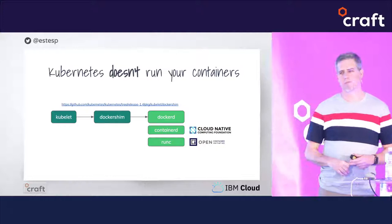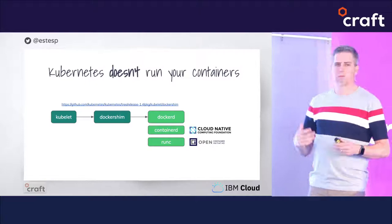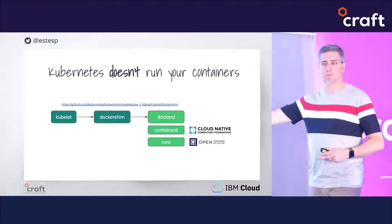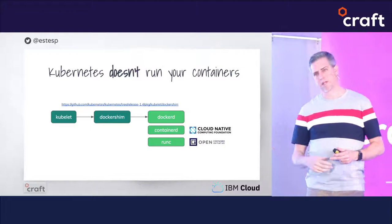There's a component called the Docker shim. When the kubelet wanted to actually do work through the Docker API, the Docker shim knew how to call into Docker: start containers, stop containers, get the logs, set up all the appropriate namespaces and so on.